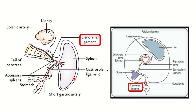Here we can see the spleen, the stomach, and the pancreas. From the stomach to the spleen there is a ligament — this is the gastrosplenic ligament. On the other hand, between the kidney and spleen there is a ligament — this is the lienorenal ligament. We can also see the hilum of the spleen, which receives the splenic artery and drains via the splenic vein. The kidney lies most posteriorly, and the lienorenal ligament connects the spleen to the kidney.